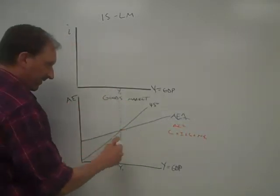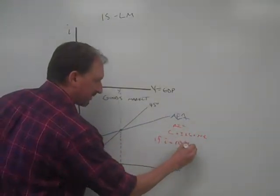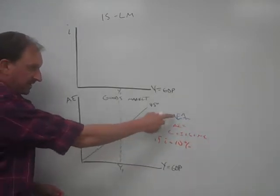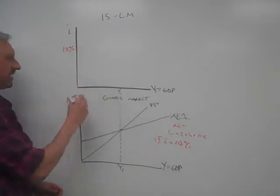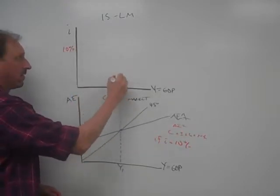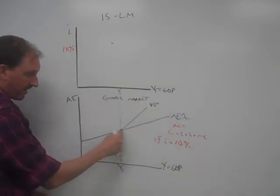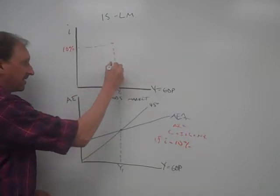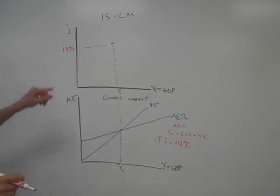Let's assume that if interest rates, if I equals 10%, then this is true. Investment is so high or high enough that we get this AE curve, so we can pick a point up here and call that 10%. Then we can say 10% investment will be such that AE equals AE1, and that's our intersection. So we get Y1 and then we get this point right there that we know is on the IS curve.